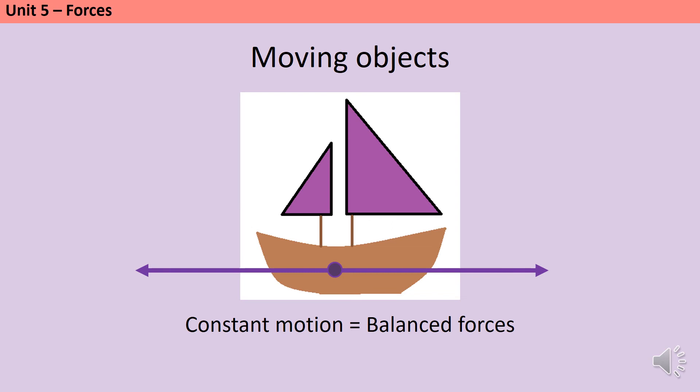This is a tough concept because it is slightly counterintuitive, but if an object is moving at a constant speed in a constant direction, then the forces acting on it must be balanced. If we look at this free body diagram, it's not possible to say whether the boat is stationary or moving, but it does tell us that it has a constant velocity. We just don't know whether that velocity is zero or a number.